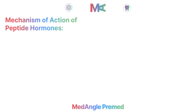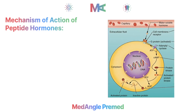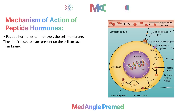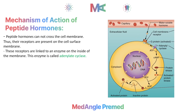Peptide hormones include all hormones made from amino acids, whether simple or modified amino acids. Peptide hormones are not able to cross the cell membrane. That is why their receptors are located on the surface of the cell membrane. These receptors are protein-based and are linked to an enzyme inside the cell called adenylate cyclase.